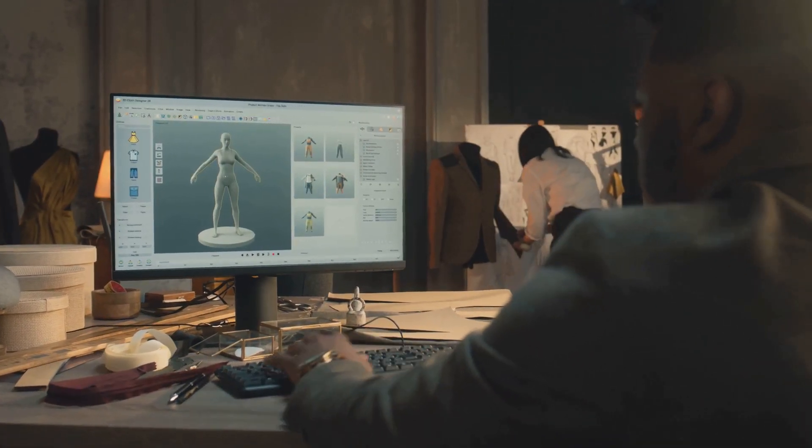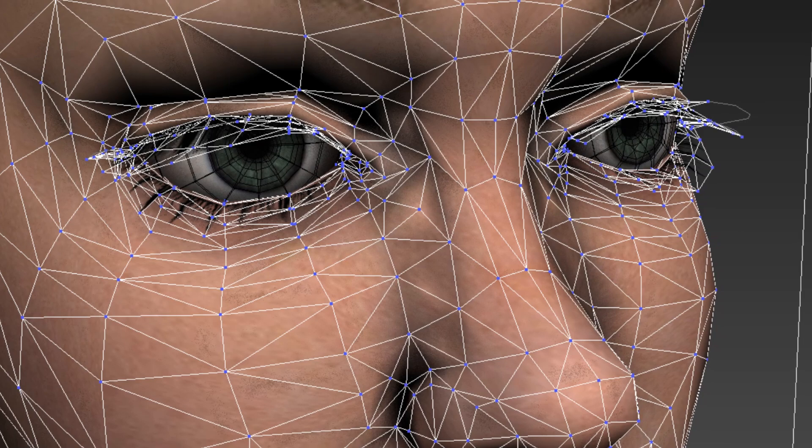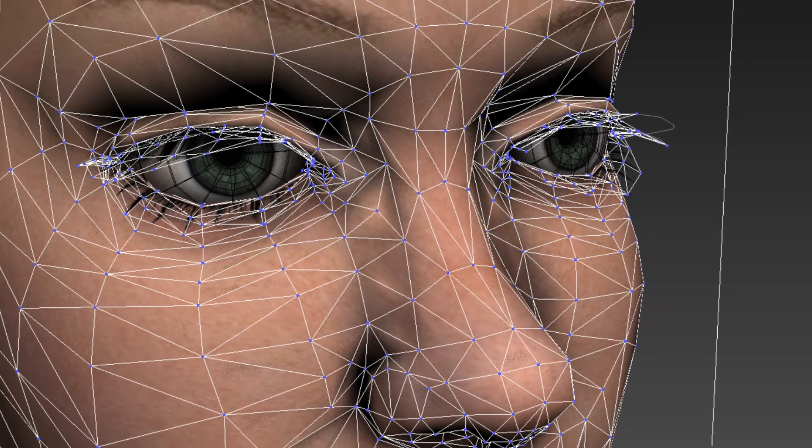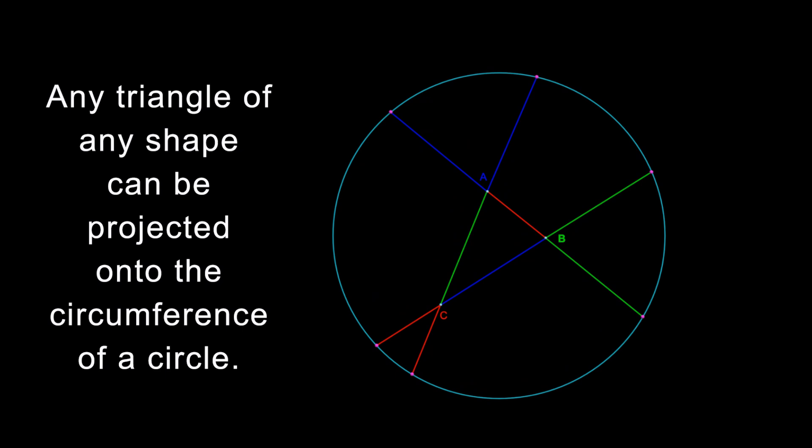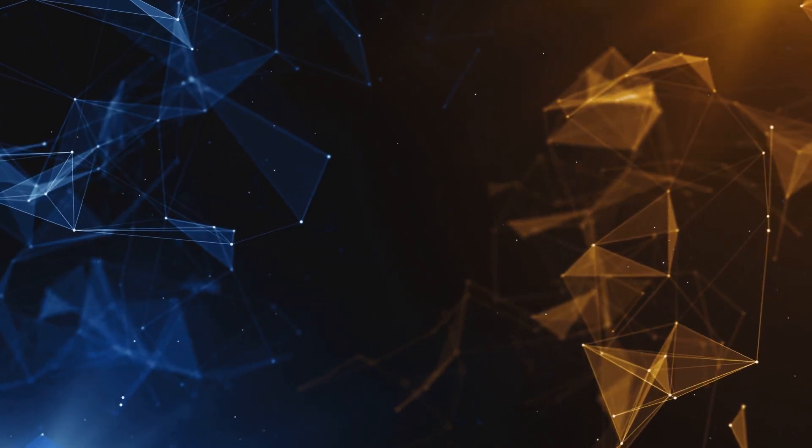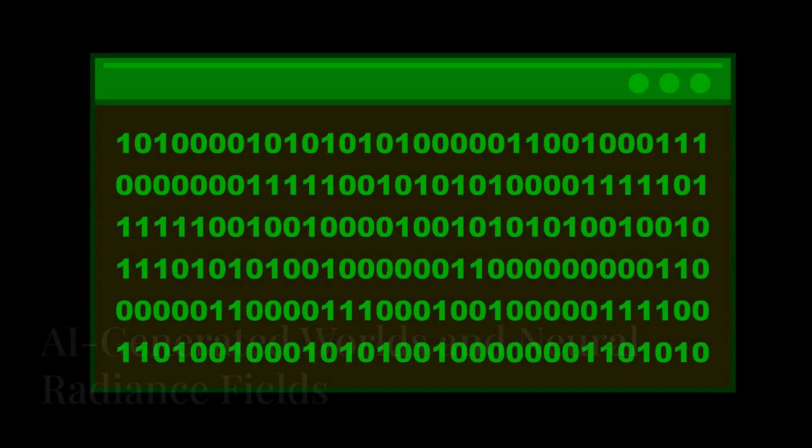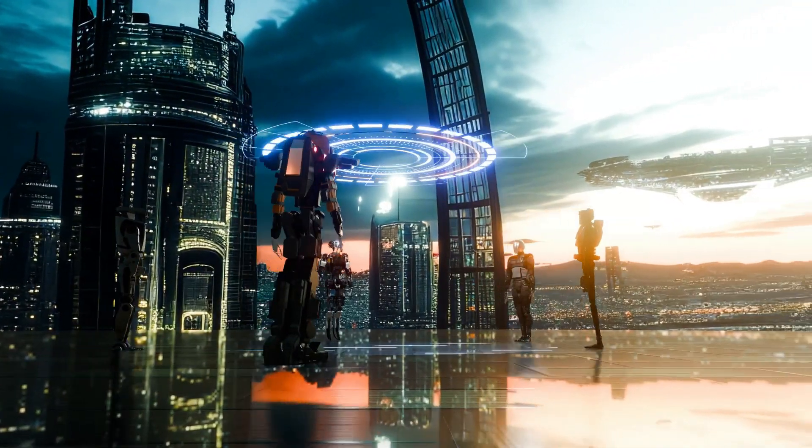In the previous video, I showed you how three-dimensional artists used to painstakingly construct three-dimensional models in order to create the virtual worlds we see in our computers. Those three-dimensional models could all be reduced to triangles. And we saw that all triangles can be projected onto the circumference of a circle. But ultimately, there are no physical triangles on your computer that can be stuck together to form larger objects. Ultimately, everything you see in a simulated computer world is generated using a mathematical code of ones and zeros.